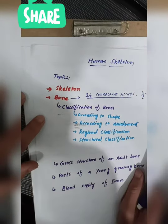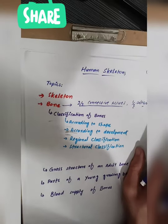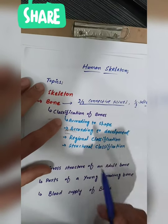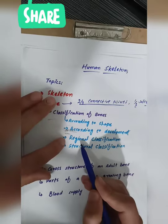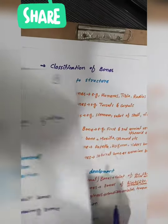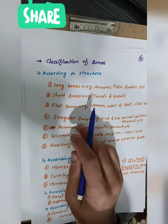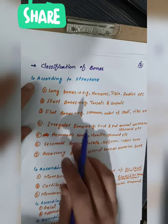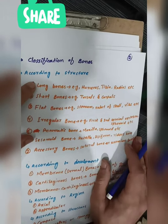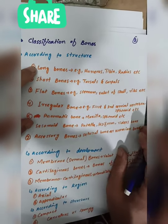Classification of bones. Bones can be classified according to shape, according to development, regional classification, and structural classification. According to structure, there are seven classifications. The first type is long bones.